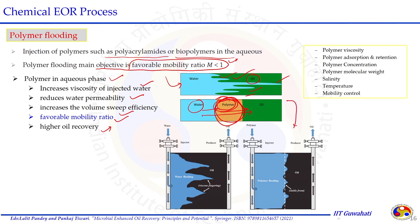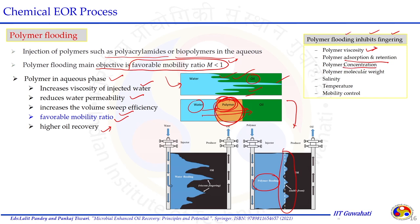Polymer flooding increases water viscosity, reduces water permeability, increases volumetric sweep efficiency, and ultimately yields higher oil recovery with less viscous fingering. Polymer selection depends on its viscosity, adsorption and retention on rock surface, injection concentration, molecular weight, and reservoir conditions — particularly salinity and temperature. Challenges include polymer degradation at high temperature, high cost, and the need to maintain effectiveness at high salinity. These are the key challenges in the polymer flooding process.